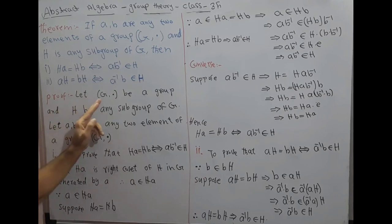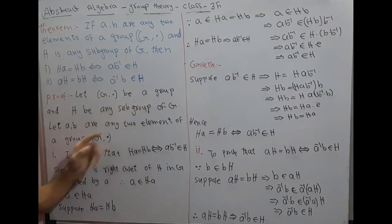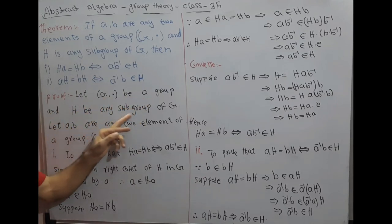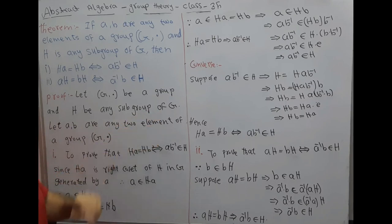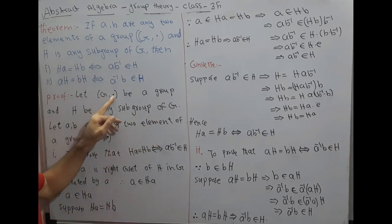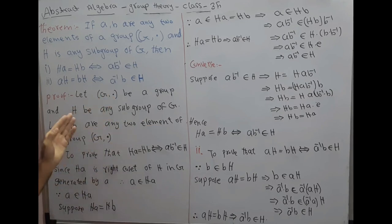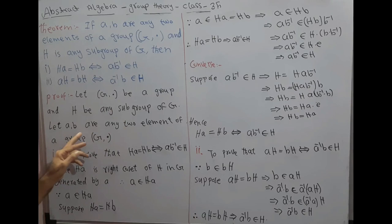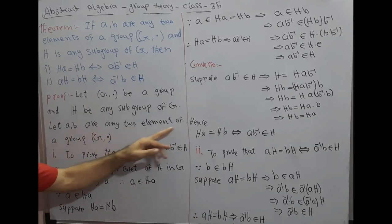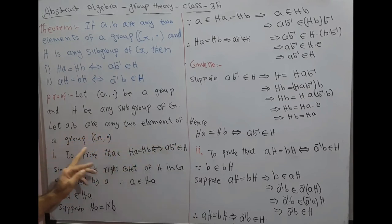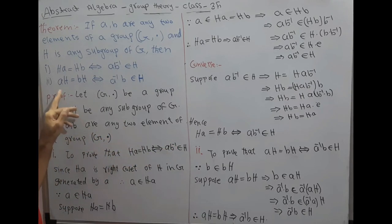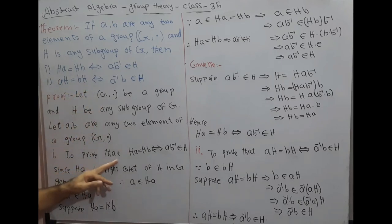Proof: Let G with respect to multiplication be a group, and let H be any subgroup of G. G with the given multiplication as a binary operation is a group, and H is a subgroup of G. Let a and b be any two elements of the group G. First, we want to prove case one.